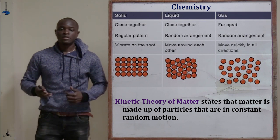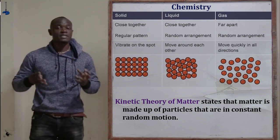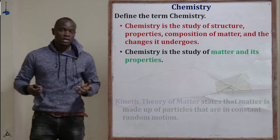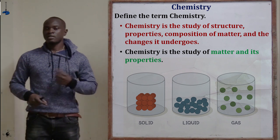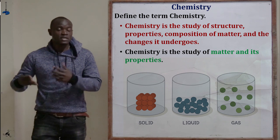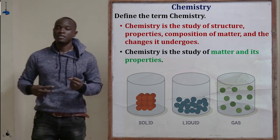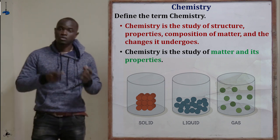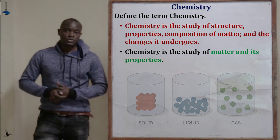So basically, in chemistry we measure our facts on the different states of matter, looking at them from different angles. To recap: the full definition of chemistry is the study of structure, properties, and composition of matter and the changes that matter undergoes. The shorter definition is that chemistry is the study of matter and its properties, including solids, liquids, and gases.